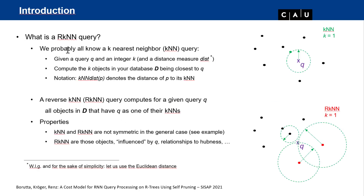Let's begin with a short introduction to reverse nearest neighbor queries. You probably all know nearest neighbor queries: given a query q and an integer k, we compute the k objects in our database that are closest to q with respect to a given distance function. We use Euclidean distance in the images for simplicity, but it could be any metric measure satisfying the triangle inequality. For example, here the green object is the 1-nearest neighbor of q.